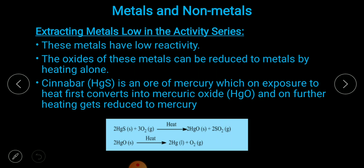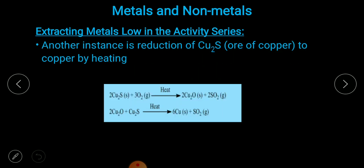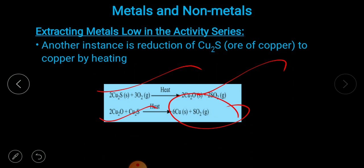Metals which are very low in the activity series have very low reactivity. The oxides of these metals are reduced by heating alone. For example, cinnabar is an ore of mercury — it is mercuric sulfide, which on exposure to heat forms mercuric oxide, and further heating gives mercury. Similarly, copper sulfide heated in presence of oxygen gives copper oxide, and further heating gives copper plus sulfur dioxide.